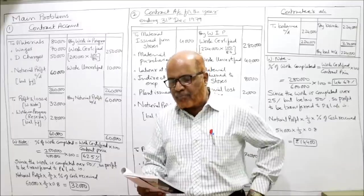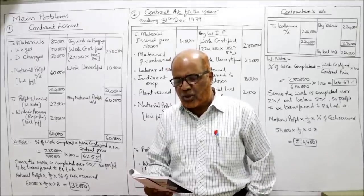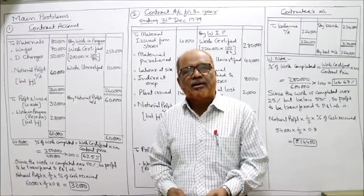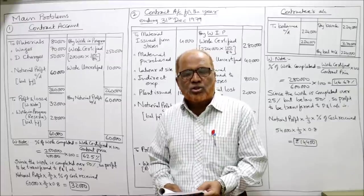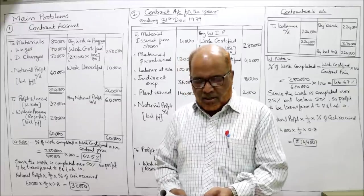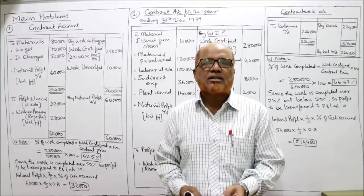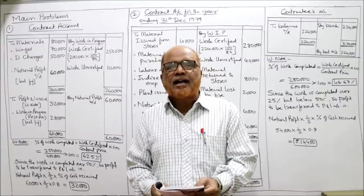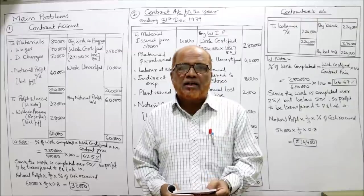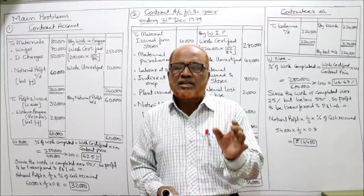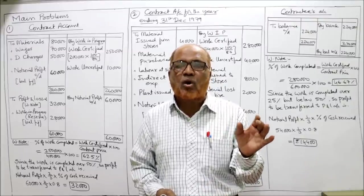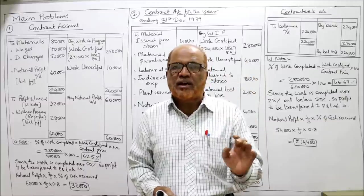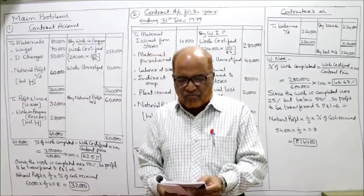The first main problem: following amounts have been spent on a contract still incomplete on 31st March 1997. We are closing the accounts on 31st March 1997, and on this date the contractor's contract is still incomplete. Materials: 80,000 rupees; wages: 70,000; direct charges: 50,000. These are the expenditures incurred, and all will go on the debit side of the contract account, which is a nominal account.